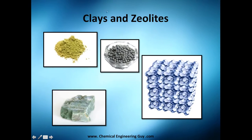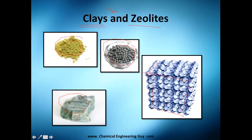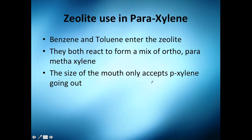First things first, the natural ones — the ones you can find in nature — are clays and zeolites. This is a zeolite, this is a zeolite, and this is a zeolite. They have this structure, but it's a natural structure. As you can see, they have holes or tunnels everywhere.